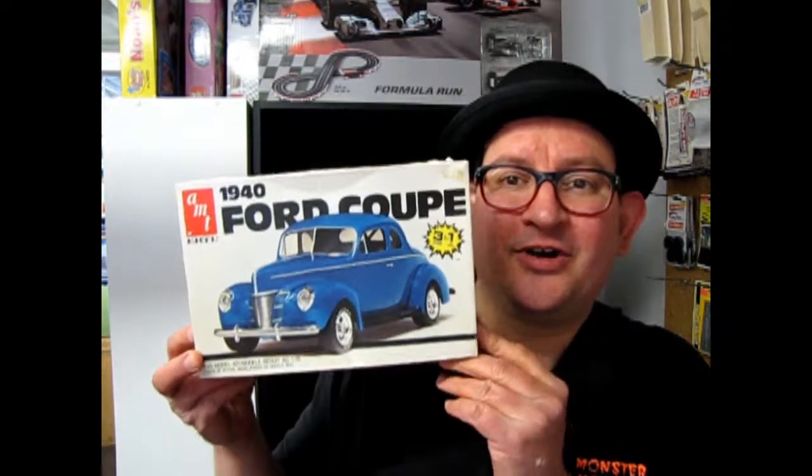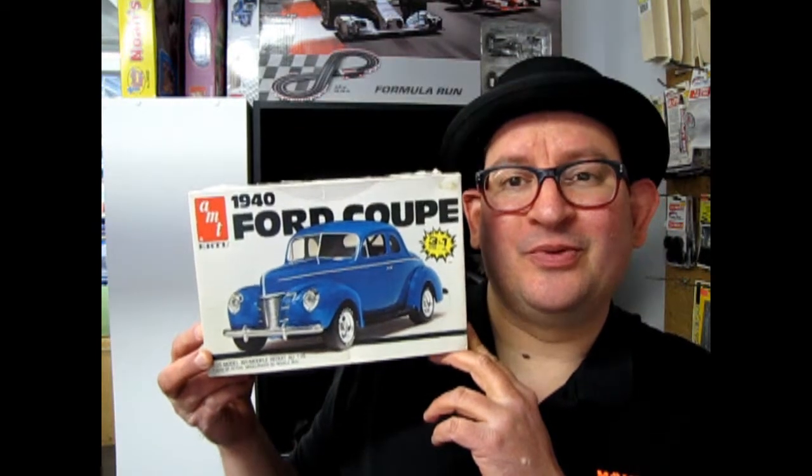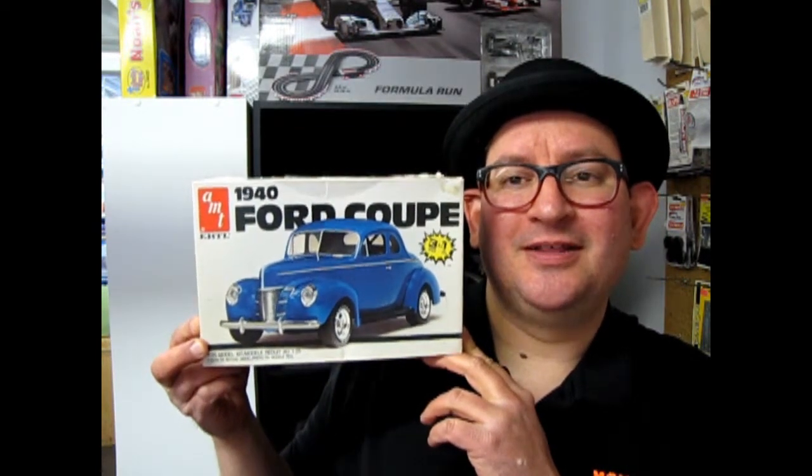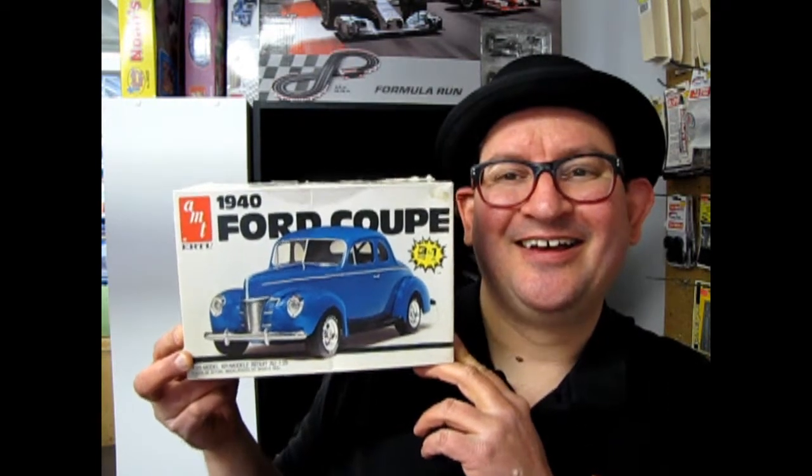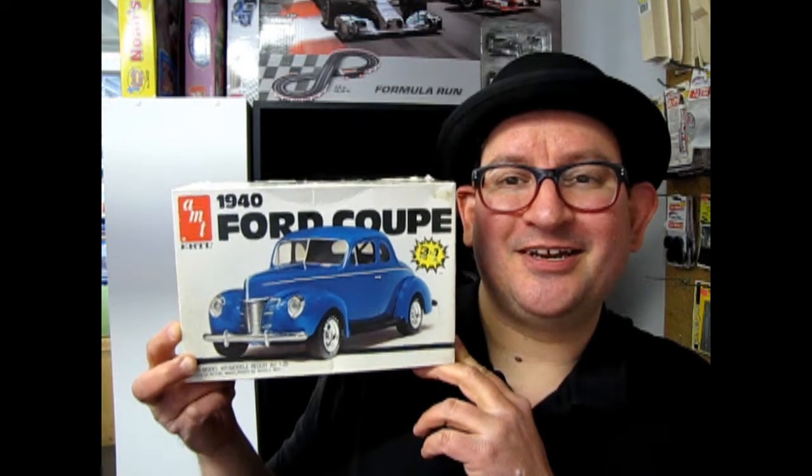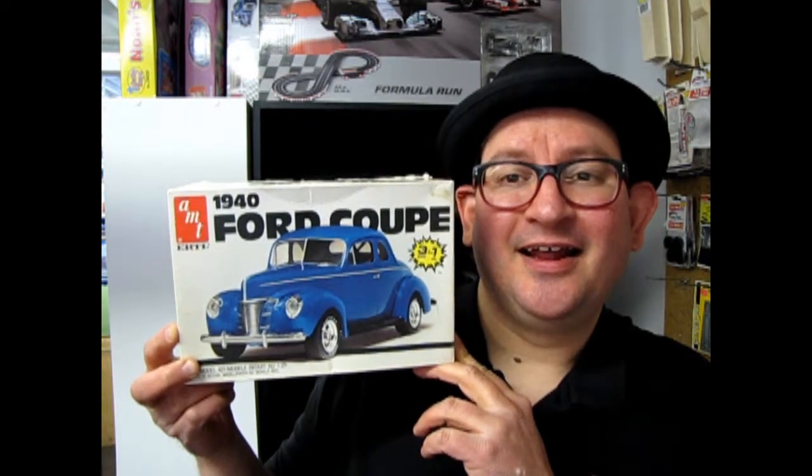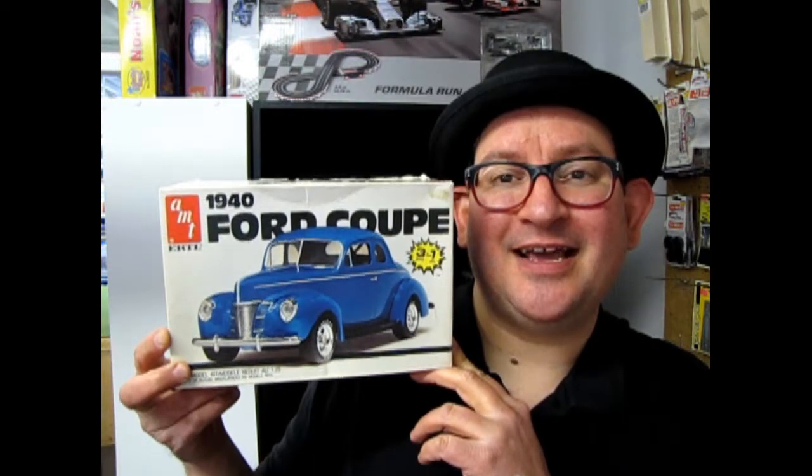Starting with one of my favorite models of all time, this is the 1940 Ford Coupe 3-in-1 and I've built many, many of these. I even tried to build a rainbow series once, one car of each color of the rainbow. Didn't quite finish it yet. But anyway, enough of that. Let's go down and open the lid on this old kit from 1986.